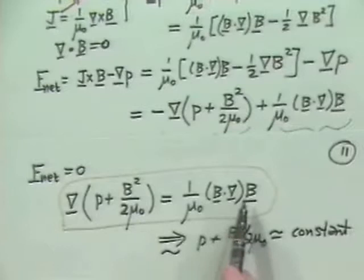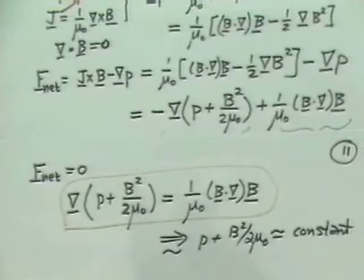And previously, when we dealt with a cylindrical model, then this gave us approximately P plus B squared over 2 mu naught is approximately constant. But obviously it's not quite because of the curvature of the magnetic field lines.